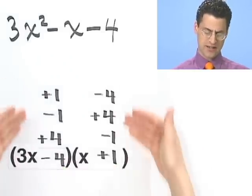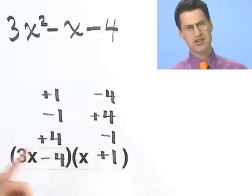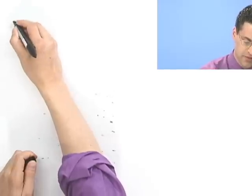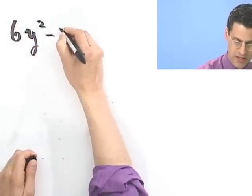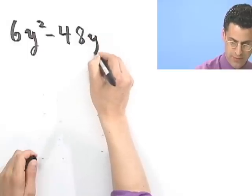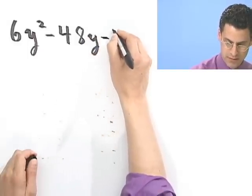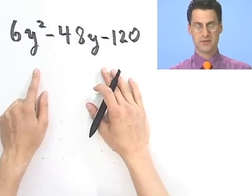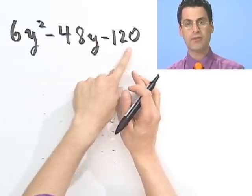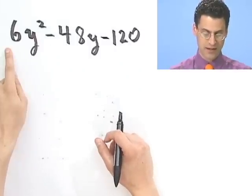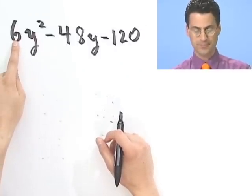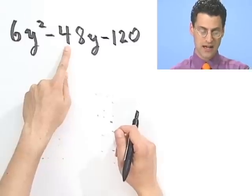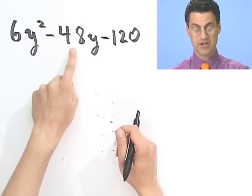So that's how you think about factoring a trinomial into two binomials — break up the squared term in a reasonable way, fiddle with the constant term thinking about signs, and try the possible cases. Now let's try another example: 6y squared minus 48y minus 120. A lot of big numbers. But notice I can factor something out of all these terms, which would make the work easier. I can factor out 6 from each term, so let me pull out the greatest common factor of 6.